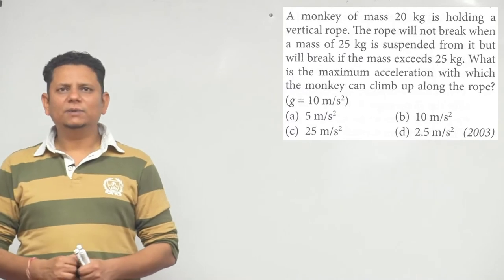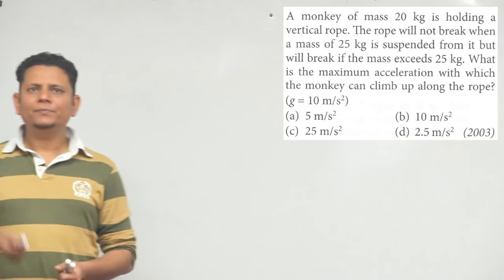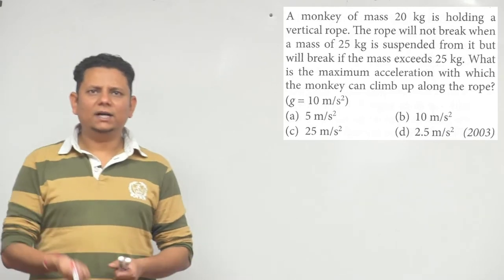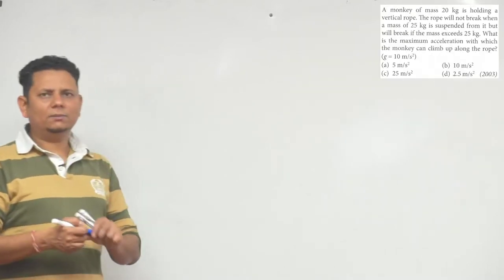What is the maximum acceleration with which the monkey can climb the rope? The answer options are 5 meter per second square, 10, 2.5, or 25 meter per second square. Simple question.